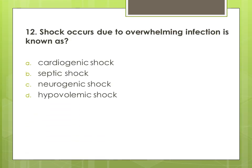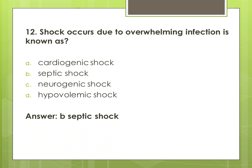Question 12: Shock occurring due to overwhelming infection is known as — options are: A. cardiogenic shock, B. septic shock, C. neurogenic shock, and D. hypovolemic shock. The correct answer is B. septic shock.